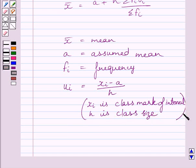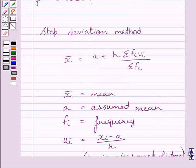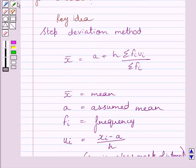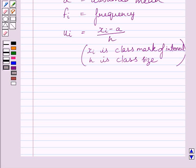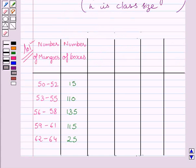Now we will use this formula as our key idea to solve the given question. Let us now start with the solution. First of all, we will rewrite the data given in the question. We are given this distribution of mangoes according to the number of boxes. First of all, let us find out the class mark for every class interval.